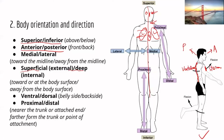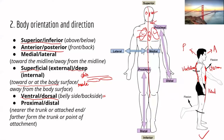Superficial means toward the body surface, and deep means going away from the surface. For example, the skin is superficial to the muscles, and muscles are deep to the skin. Next, ventral and dorsal: ventral refers to the belly side, and dorsal refers to the back side. You can think of them as basically the same as anterior and posterior — ventral equals anterior, dorsal equals posterior.